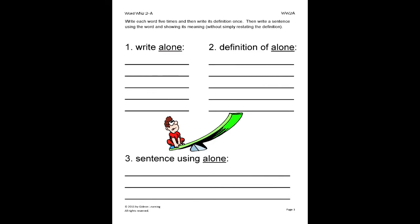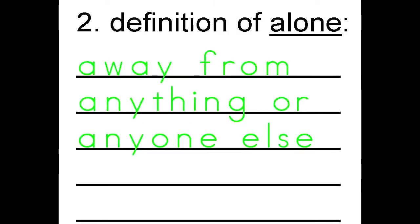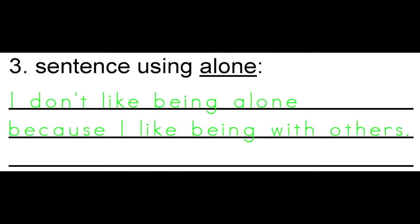On this exercise, the student will write each word five times and then write its definition once. Then write a sentence using the word and showing its meaning. When writing a sentence, be sure to use your own words and creativity. Here is a good example: I don't like being alone because I like being with others.